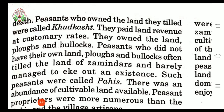Another kind of peasants were those who did not have their own land, plough or bullocks. They often tilled the land of the zamindar and could only manage to eke out an existence. Eke out an existence means to manage to live with very little money or food. These kinds of peasants were called pahis.